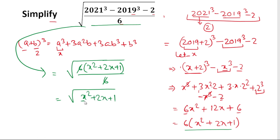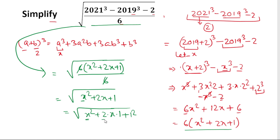We can recognize this as x² plus 2 times x times 1 plus 1², which is in the form of a² plus 2ab plus b². This means it is a perfect square in the form (a+b)².